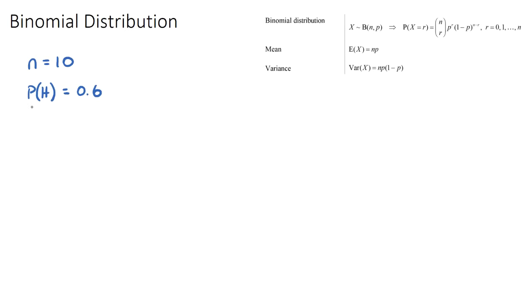Heads will be a success for this question, and once we know the number of trials and the probability of success we can solve a bunch of questions. Typically they'll ask: what's the probability for a given number of heads? So let's say the random variable X is how many heads we get in ten flips. What's the probability that X equals three?